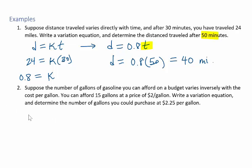So the number of gallons, we'll say n, you can afford varies inversely. We know that we're going to have division in this equation. So we'll say k divided by the cost per gallon, so k over c.